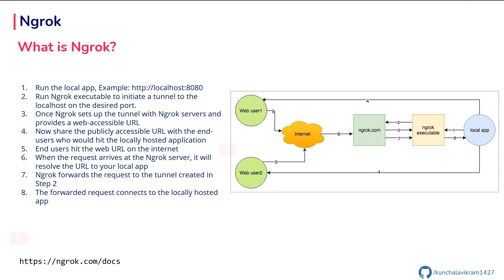This is the overall process. First you run your local app that listens on some port, let's say port 8080, then you invoke the ngrok executable which creates a secure tunnel between your locally hosted application and the ngrok servers. Once you get the publicly accessible URL from the ngrok server, you can share it with colleagues who want to access your application. When a user hits the URL, the request is redirected to the ngrok servers which in turn redirect it back to your local application running on the specific port.